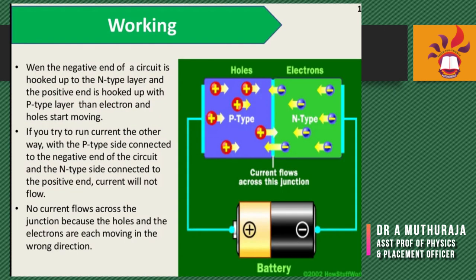The working principle: when the negative end of the circuit is connected to the n-type layer and the positive end is connected to the p-type layer, electrons and holes start moving. Here I am showing the electron flow in the circuit, with the battery terminal indicated. The holes and electrons are attracted toward each other — when this happens, current flows.